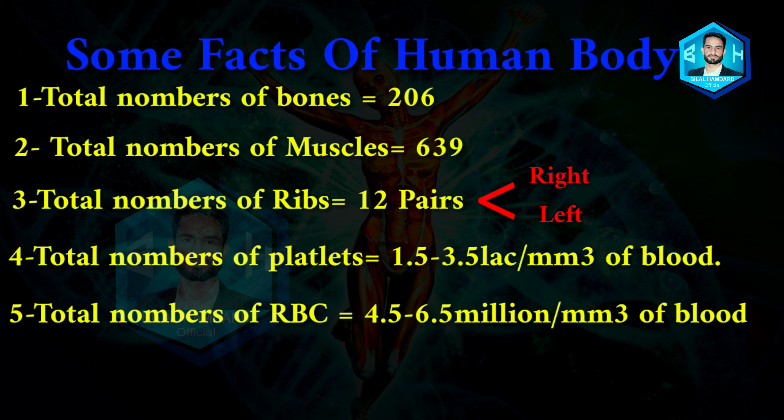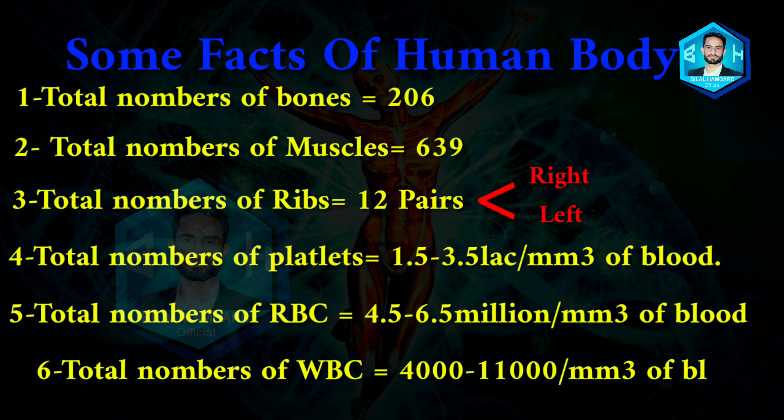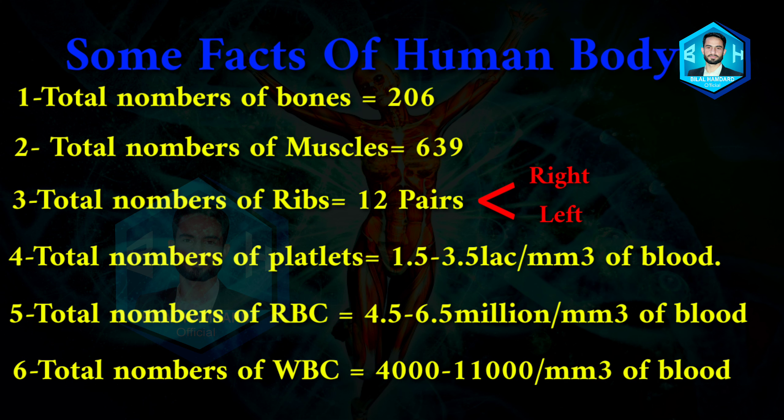Number six: total number of white blood cells or leukocytes is 4,000 to 11,000 per millimetre cube of blood.